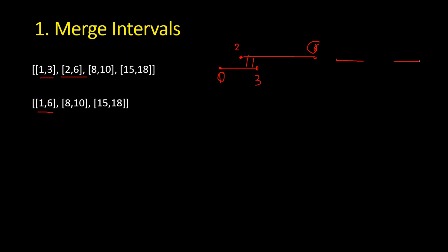Instead of 4 intervals, we now have 3. You can do this using a sorting approach: sort the intervals based on the starting time, then iterate from left to right. Compare the ending time of the current interval with the starting time of the next — if it's less, merge them; otherwise add the current interval to the result.